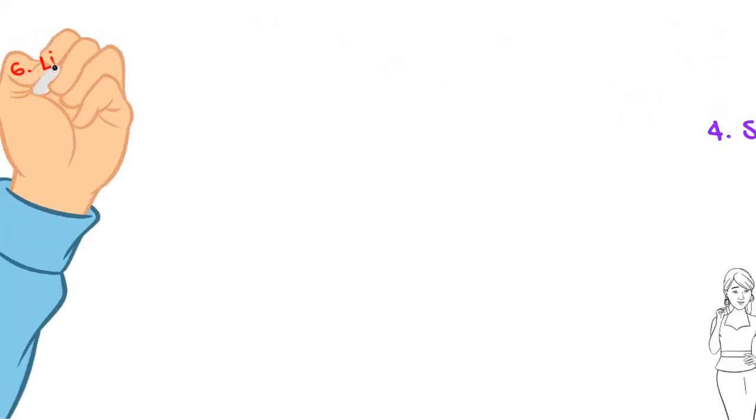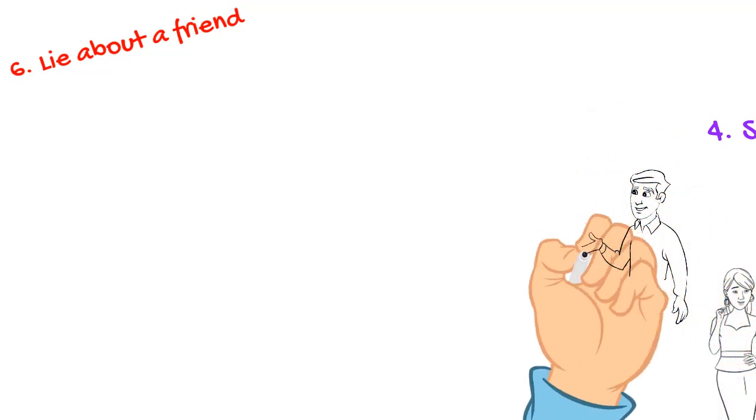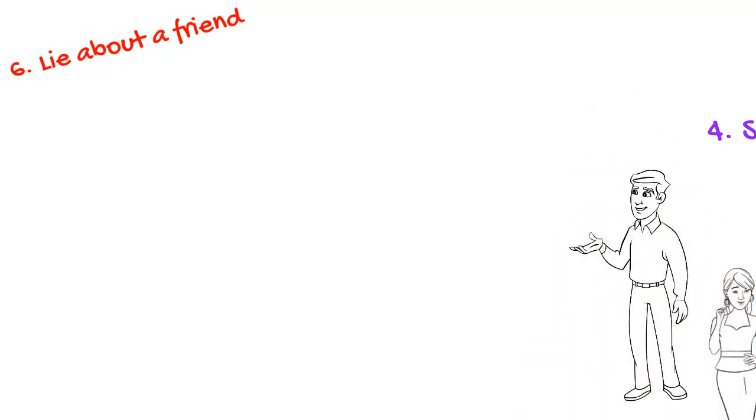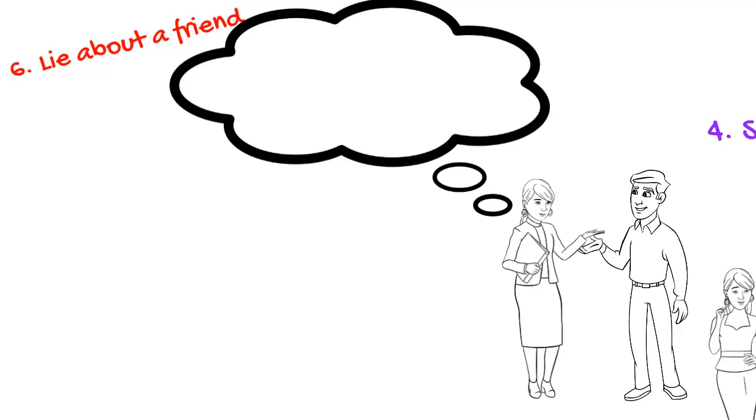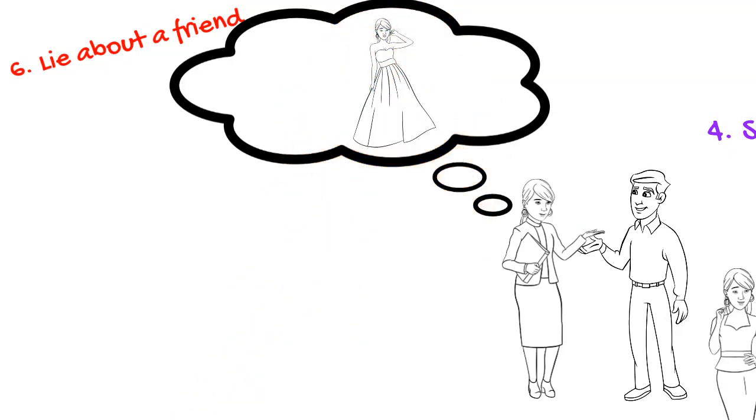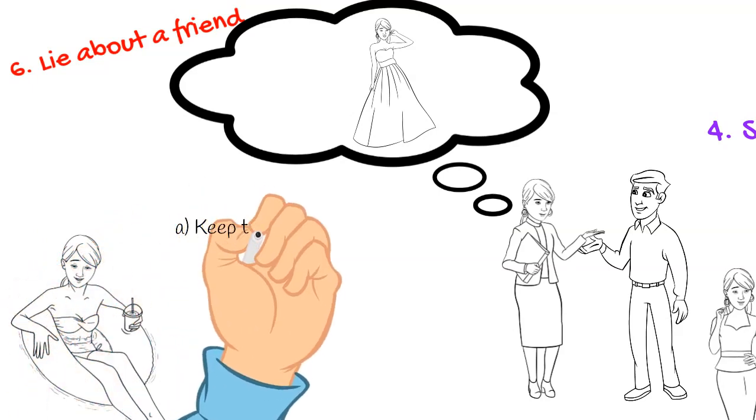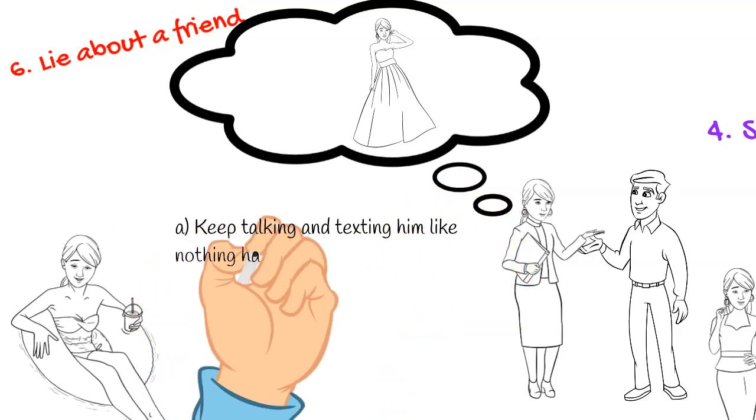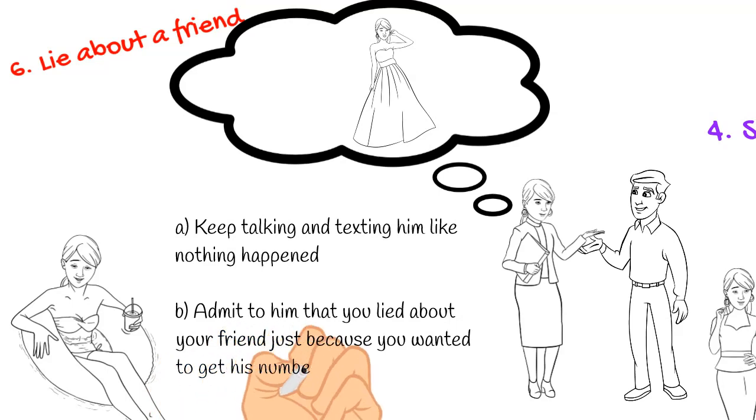Six: lie about a friend. Another easy way to get his number is to simply lie to him about a friend. You can tell him that your imaginary friend is into the same things as him and that it would be great if they could connect. Then ask for his number just in case an opportunity arises. Once you get his number, you can either keep talking like nothing happened, or admit to him that you lied about your friend just because you wanted to get his number.